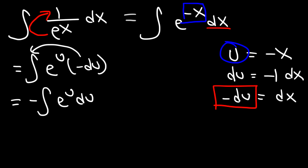Now the antiderivative of e to the u du is just e to the u. And that's just something you need to know. So we're going to have negative e to the u plus some constant c.